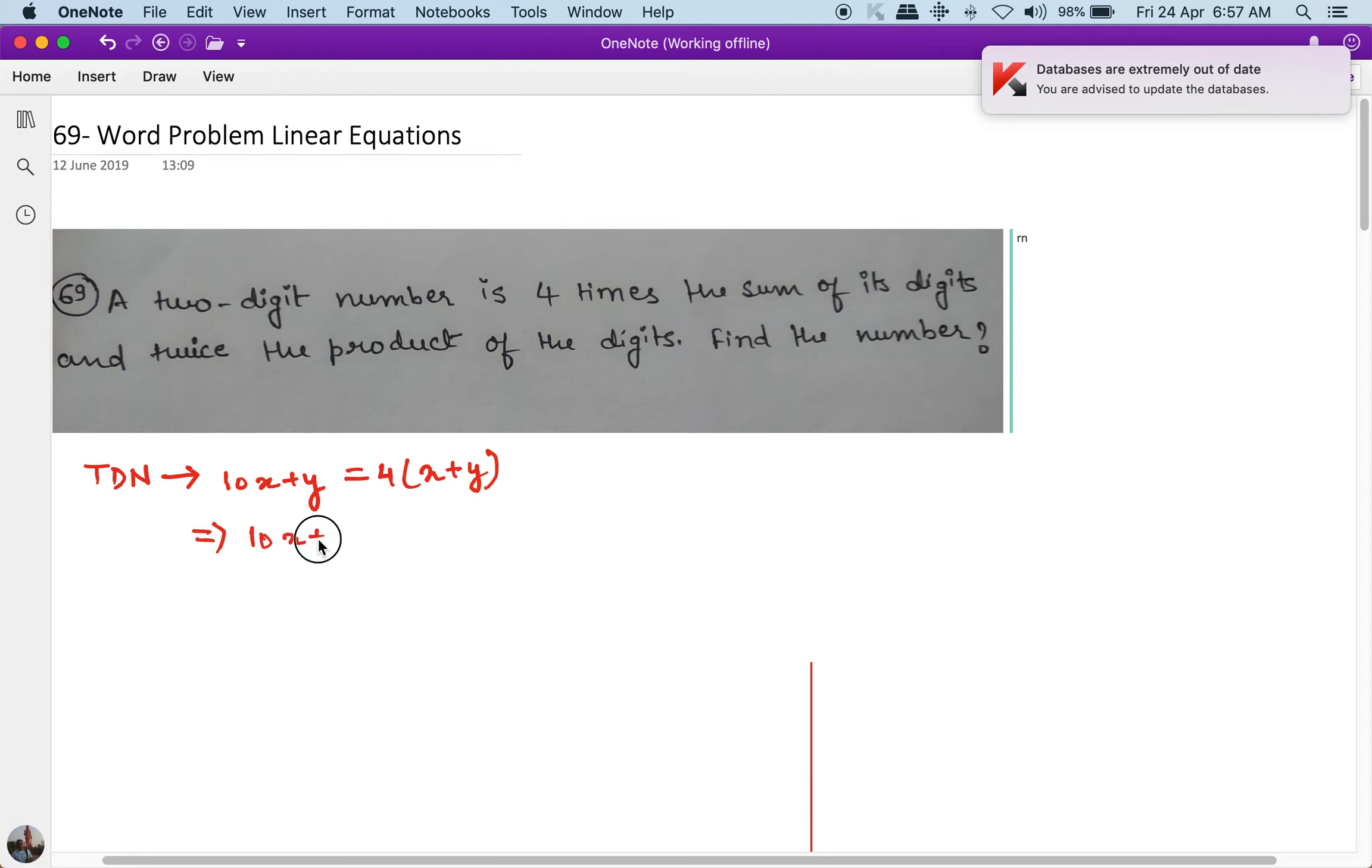If I solve for this condition what I get is 10x plus y is equal to 4x plus 4y. And what I get here is 10x minus 4x is equal to 4y minus y. What comes here is 6x is equal to 3y or 2x is equal to y.